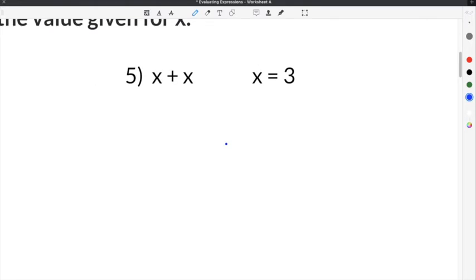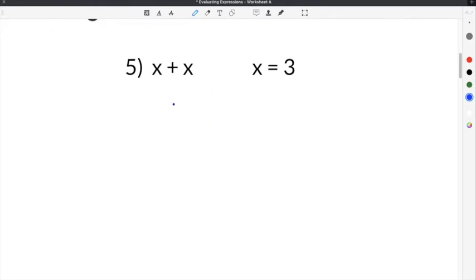The last problem is number 5. This problem gives us the expression x plus x. In this case, x equals 3 and we have two x's in our expression. This means we're going to take this 3 and substitute it into both x's. Since there are two variables, the 3 has to be substituted into both.